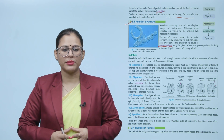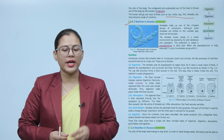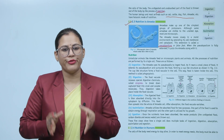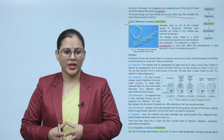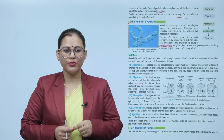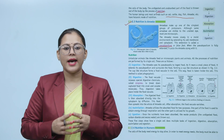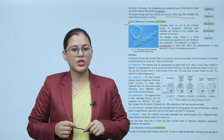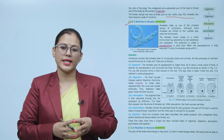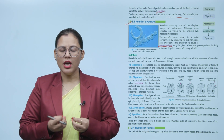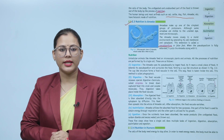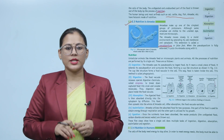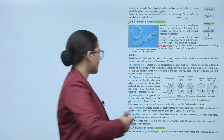Since amoeba is a unicellular animal, all processes of nutrition are performed by its single cell. Number one: Ingestion. The amoeba uses its pseudopodia to ingest food. As it nears a small piece of food, it extends its pseudopodium and surrounds the food, forming a cup-like structure as shown in figure 2.2. The cup-like structure forms a food vacuole in the cell, and this way food is taken inside the cell. This method is called phagocytosis.